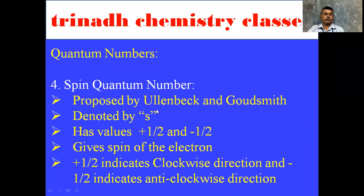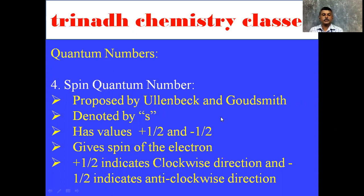The fourth quantum number is the Spin Quantum Number. It is proposed by Uhlenbeck and Goudsmit, denoted by s. It has values plus half and minus half. Plus half indicates the clockwise direction and minus half indicates the anti-clockwise direction of the spin of the electron.